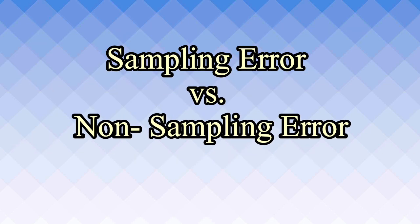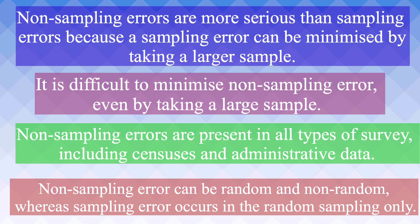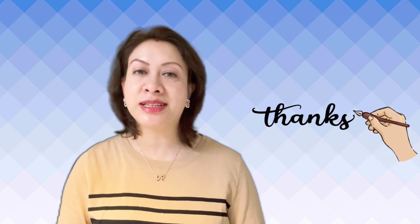Some points of difference between sampling error and non-sampling error: Non-sampling errors are more serious than sampling errors because a sampling error can be minimized by taking a large sample, whereas it is difficult to minimize non-sampling errors even by taking a large sample. Non-sampling errors are present in all types of survey including censuses and administrative data. Non-sampling error can be random and non-random, whereas sampling error occurs in random sampling only.